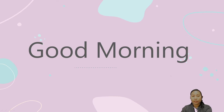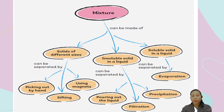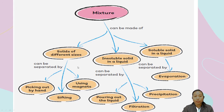Our previous lesson was about mixtures. We know that we can separate mixtures in many ways. There are three different kinds of mixtures: solids of different sizes, insoluble solids in a liquid, and soluble solids in a liquid — meaning the soluble ones can be mixed with a liquid, and the insoluble ones cannot.